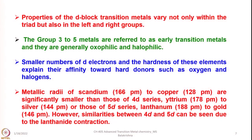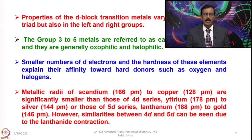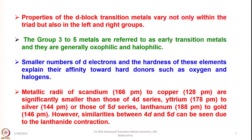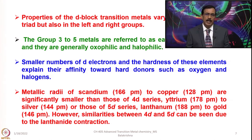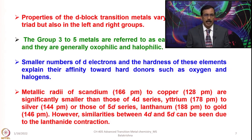Those with electronic configurations of D1, D2, and D3, having up to 5 electrons in their valence shell considering 2S electrons, are referred to as early transition metals — or almost up to D5 electrons. Once we cross manganese and go further towards the right side of the periodic table, they are considered late transition metals. The smaller number of D electrons in the early metals and the hardness of these elements explain their affinity towards hard donors such as oxygen and halogens — that is the reason they are called oxophilic and halophilic.